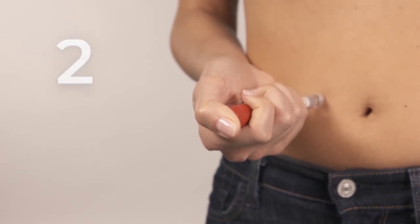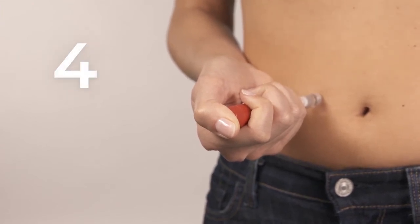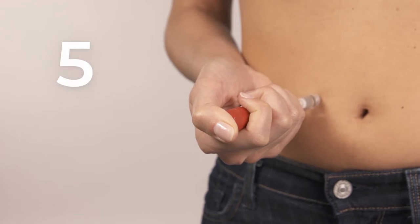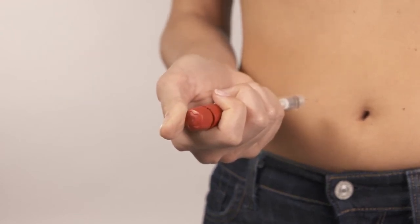Hold the dose knob down for a slow count of five before you remove from your skin. One, two, three, four, and five. There. Remove the needle from your skin, then release the knob.